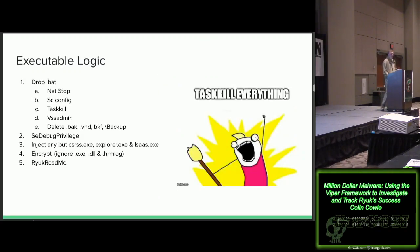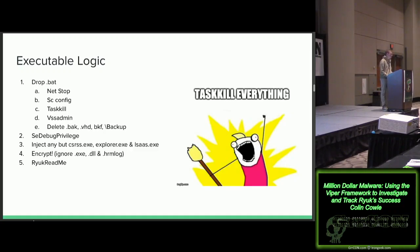When Ryuk first runs on a system, it drops a script that runs NetStop on practically every service or security tool it knows, attempting to stop literally everything. If services are using files on that system, Ryuk won't be able to get the file handle and can't encrypt them. It uses NetStop, SCConfig, TaskKill, and VSSAdmin to delete shadow copies, and manually searches for .back files and other common backup formats. It then looks for processes other than CS, RSS, Explorer, and LSAS, attempts to hollow them and inject malicious code. Finally, it encrypts everything except .exe, .dll, and .hermlog files — the latter being legacy code from the Hermes ransomware.